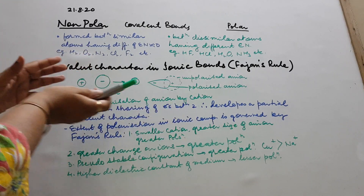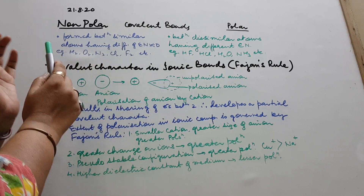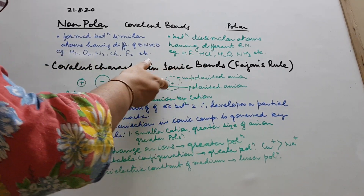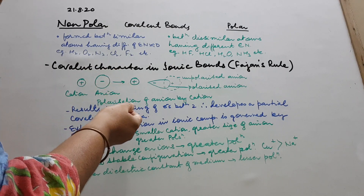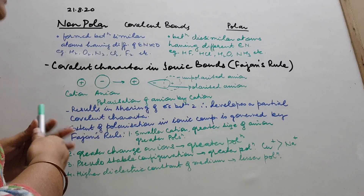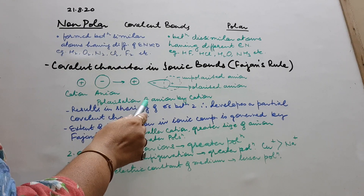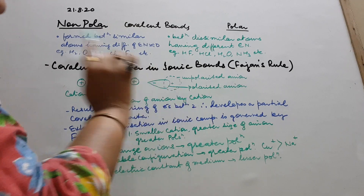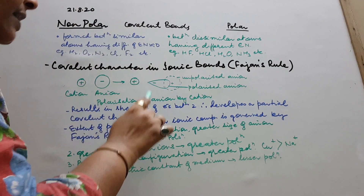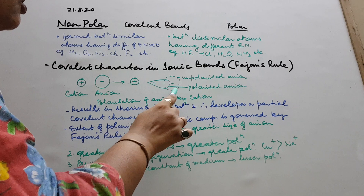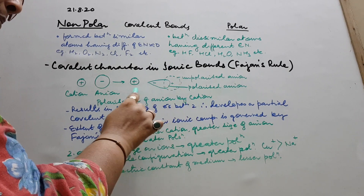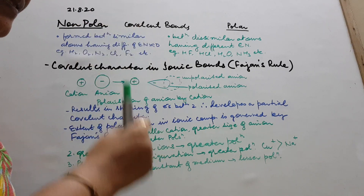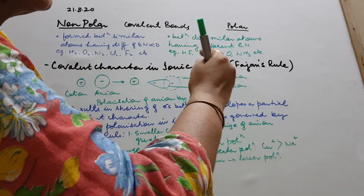The anion's shape is slightly pulled towards the cation. This distortion in the geometry of the anion — it was spherical earlier — is known as polarization of the anion by the cation.